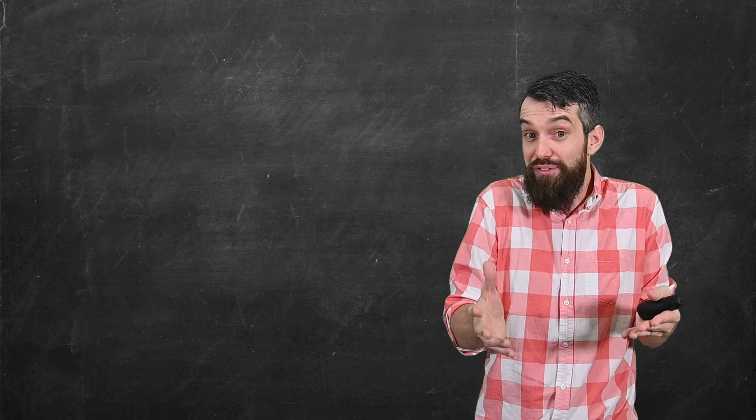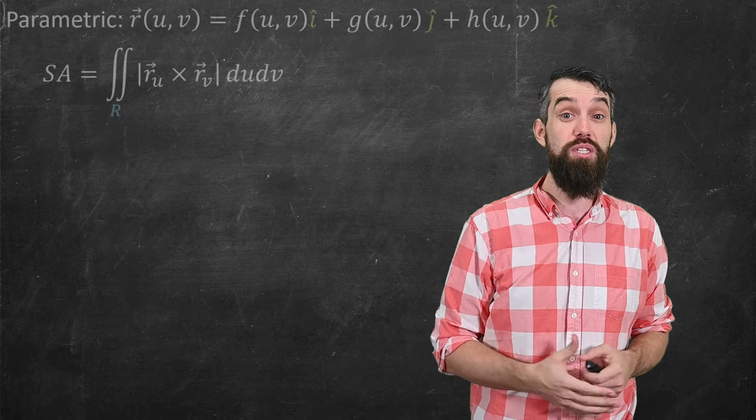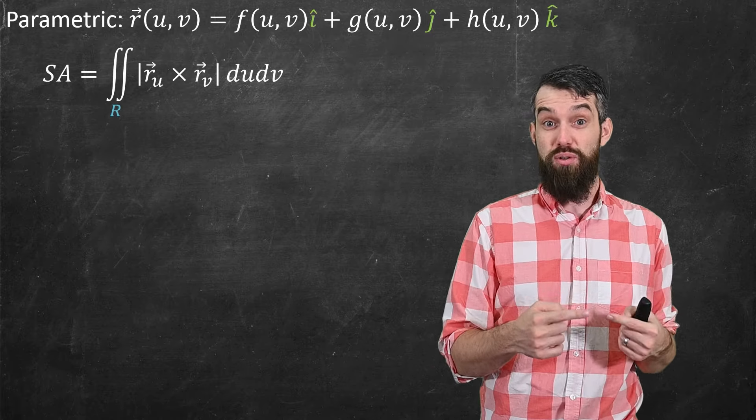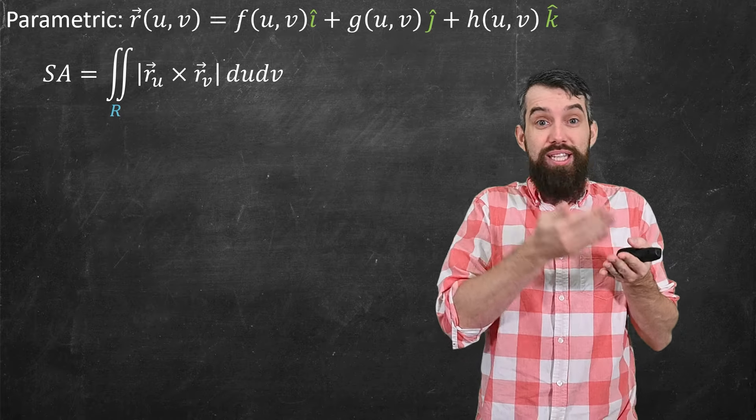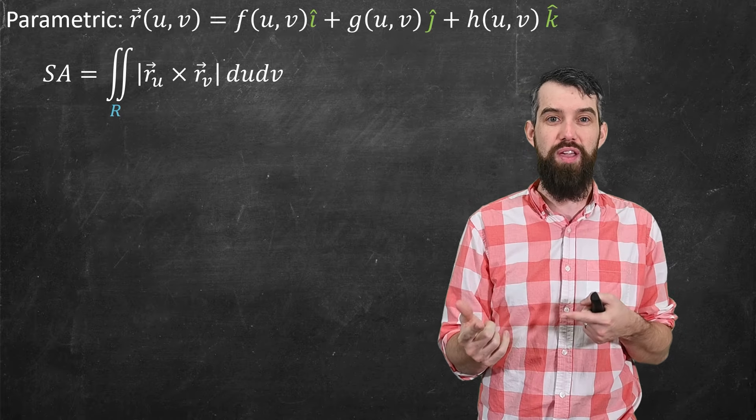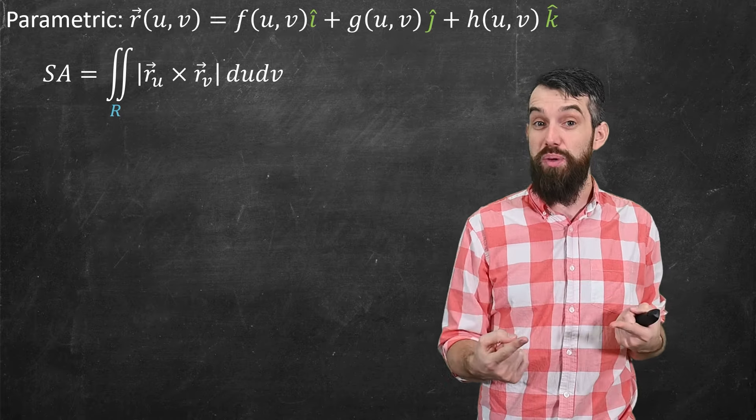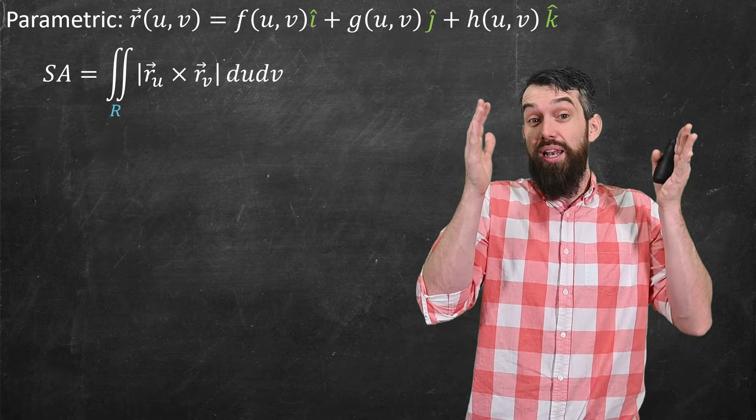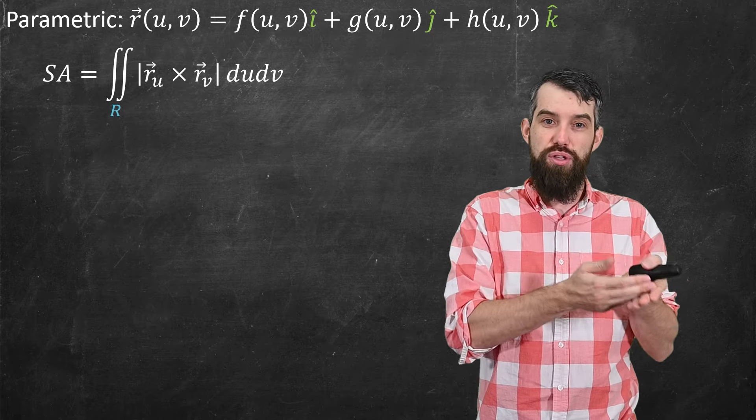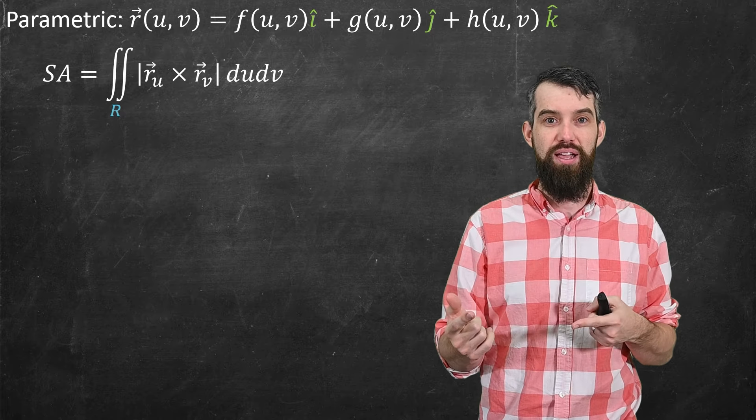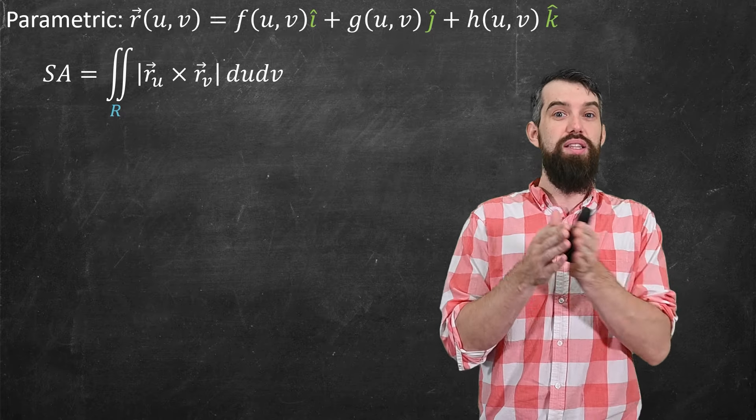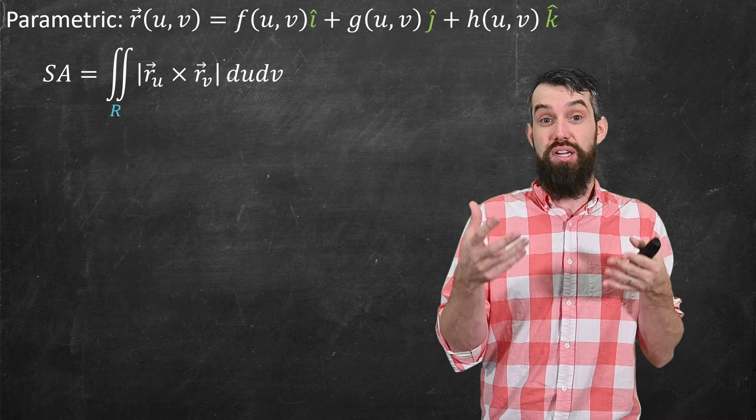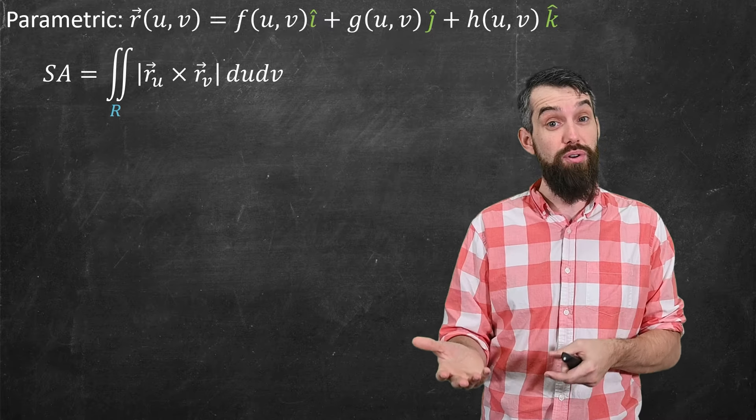So in our previous video, we've talked about how to compute this in a few different cases. First, there was parametric. If your surface would describe parametrically some position function r in terms of u and v, then your surface area could be computed by taking the double integral of your integrand being the length of the cross product r_u cross r_v du dv. And so the combination of the cross product and the du dv is our little element of surface area when it's described parametrically.